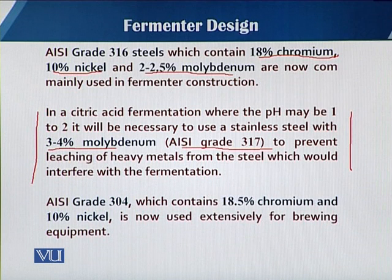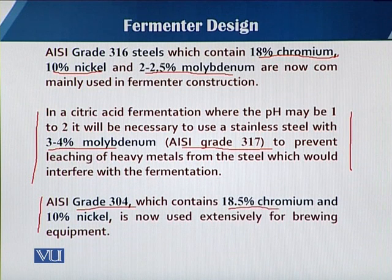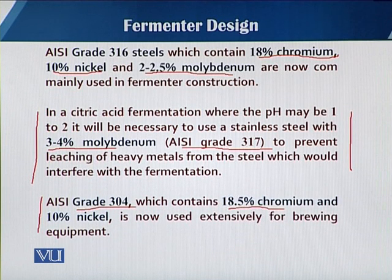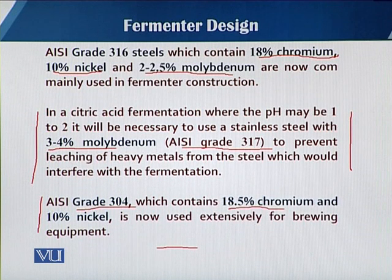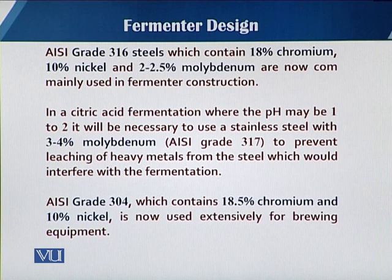In some cases, 304 grade contains 8.5 percent chromium. In 316 and 317 the chromium percentage is 18 percent, and the nickel content in 304 and 316 is the same, but in 304 there is no molybdenum. Just by the addition of molybdenum the cost increases, but adding more molybdenum gives a higher quality stainless steel suitable for fermenter construction.